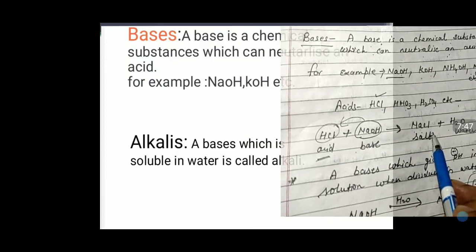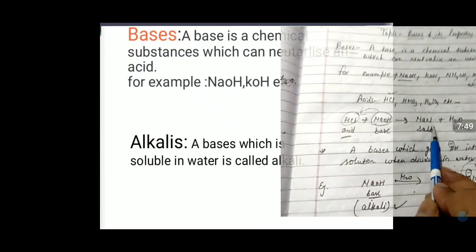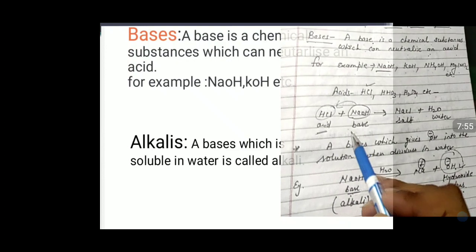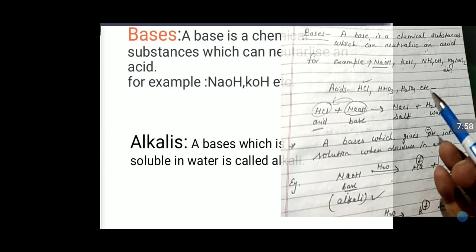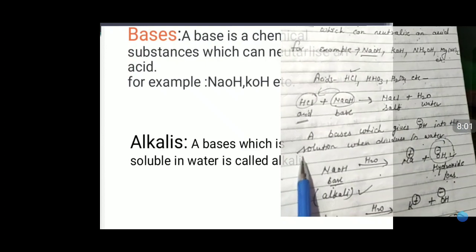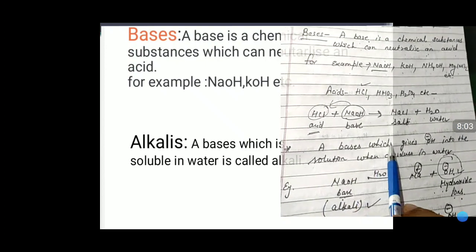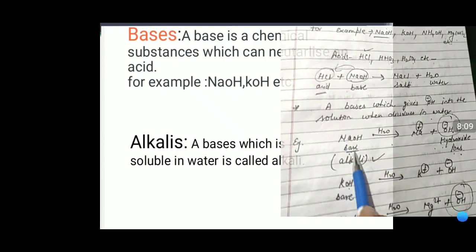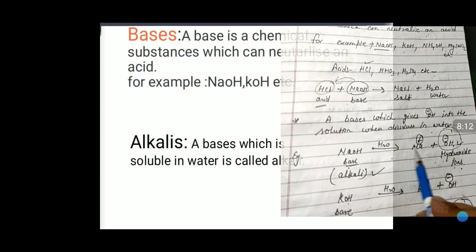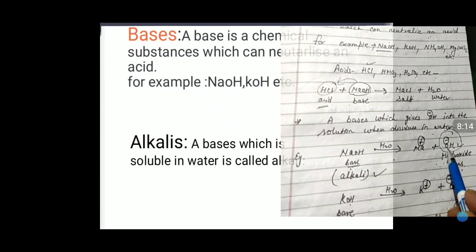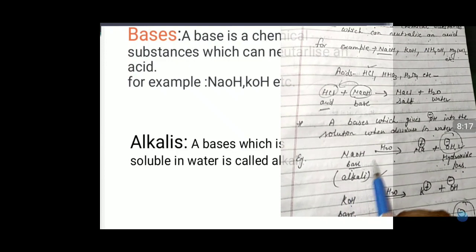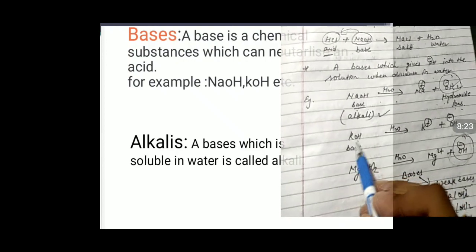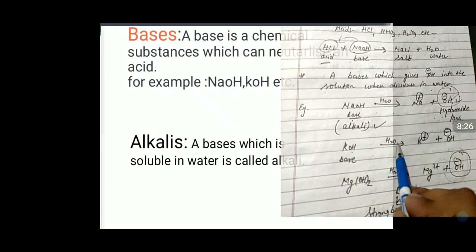This reaction is called the neutralization reaction. The main general property of a base is that it gives OH⁻ (hydroxide) ions when dissolved in water. For example, NaOH dissolved in water gives Na⁺ and OH⁻. Similarly, KOH (potassium hydroxide) when dissolved in water also releases OH⁻ ions.